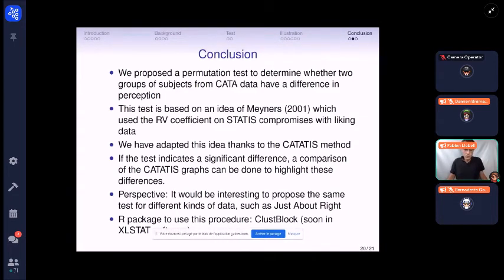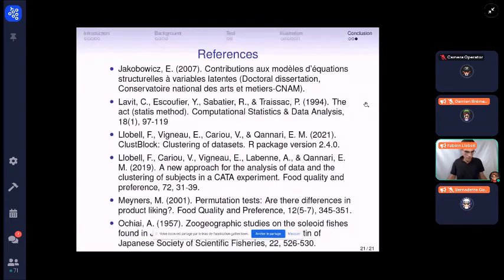As a perspective, it would be interesting to propose some tests for just-about-right data. And we add this function in our RV package, which is ClustBlock. And it will be soon in the XLSTAT software. Thanks for your attention.